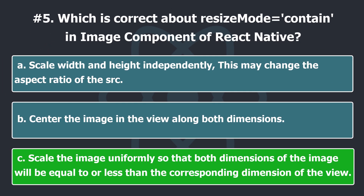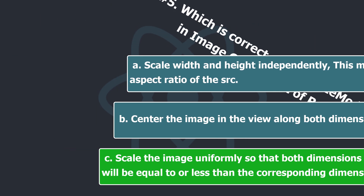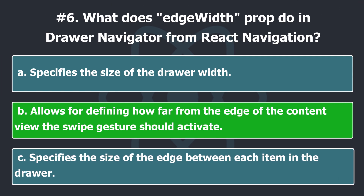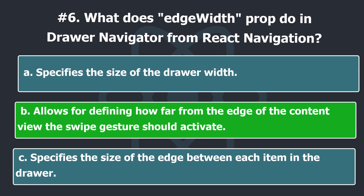Content resize mode scales the image so it will be equal to or less than the corresponding dimension of the view. Edge width allows for defining how far from the edge of the content view the swipe gesture should activate.